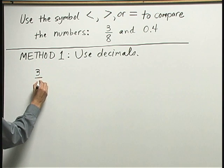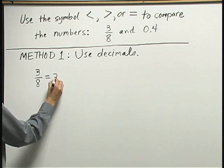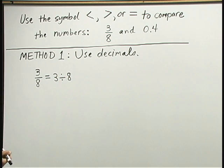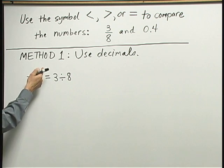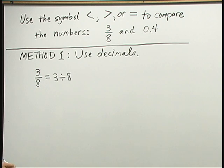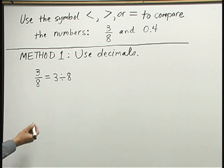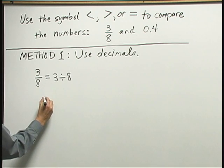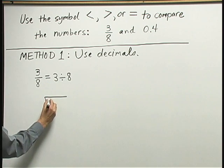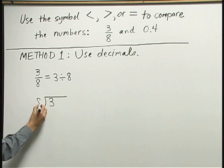The fraction, 3 eighths, can be thought of as a division problem. 3 divided by 8. We can write any fraction as division. We divide the numerator, the number on top, by the denominator, the number below. Now, to convert to decimal, I want to write this using the long division process where the 3 now goes inside the long division box and the 8 goes in front.